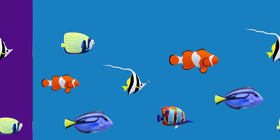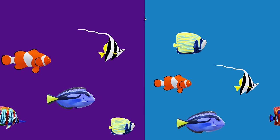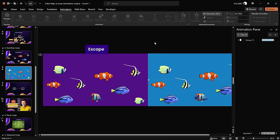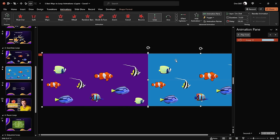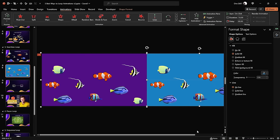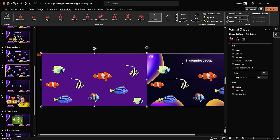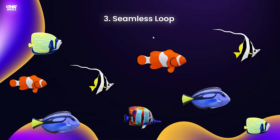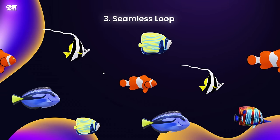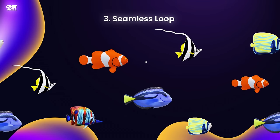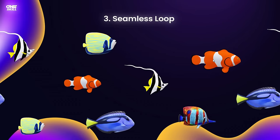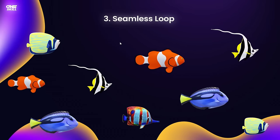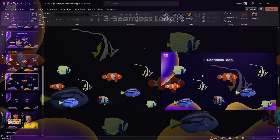Select both groups, group them into one big group, then apply a motion path line animation — direction Right. Grab the red bubble and move it precisely to the right edge of the slide so the purple rectangle's fish perfectly overlap the blue rectangle's fish. In the animation pane set duration to ten seconds, remove smooth start and smooth end, and set repetition to until the end of slide. Then make both rectangles invisible by setting their fill to No Fill — now you can see the fish and the slide background looping seamlessly.